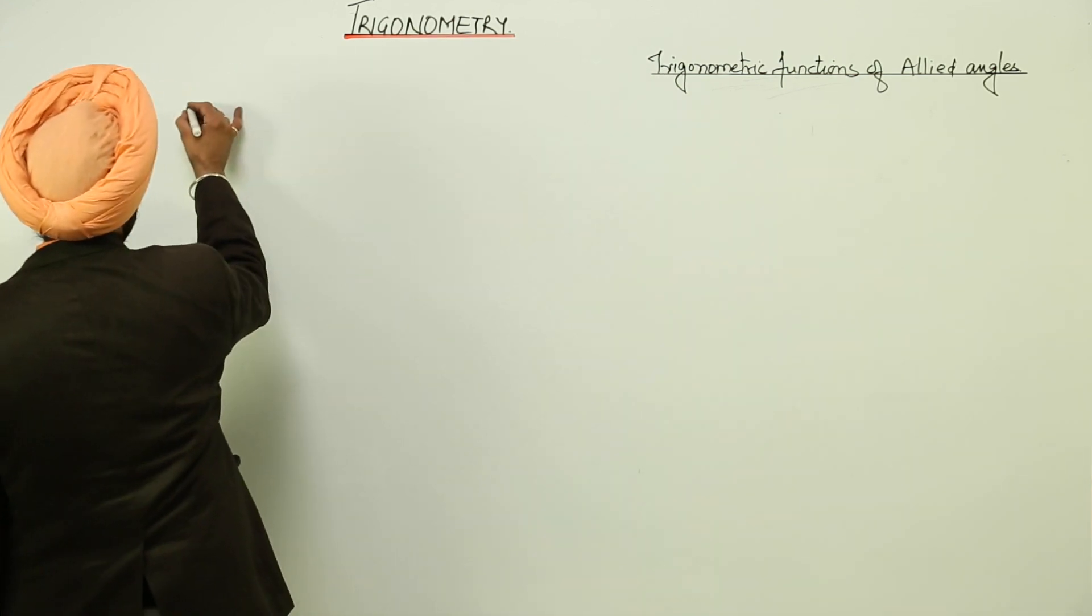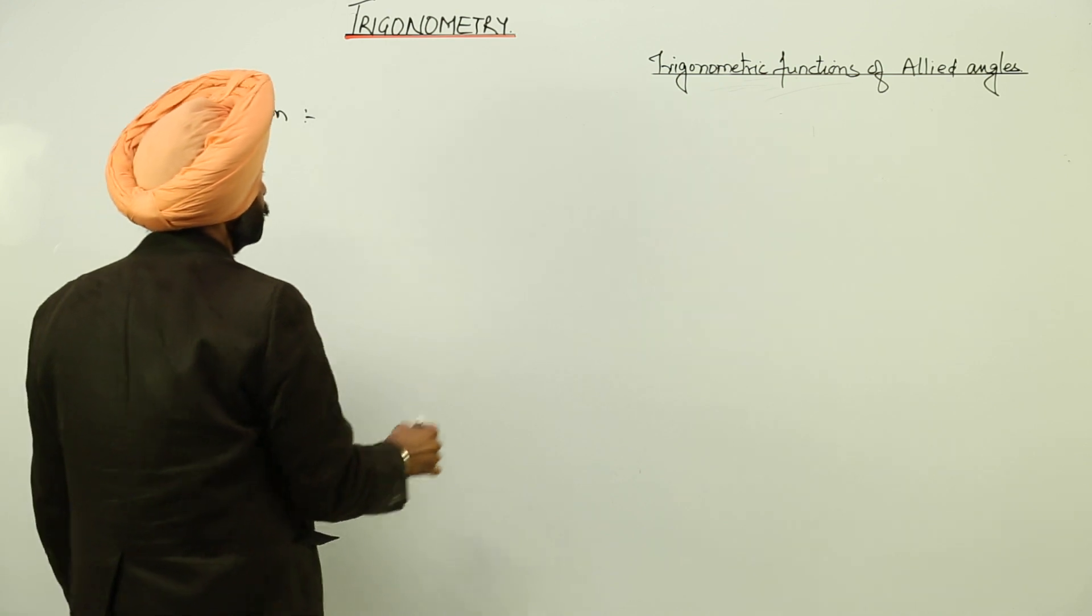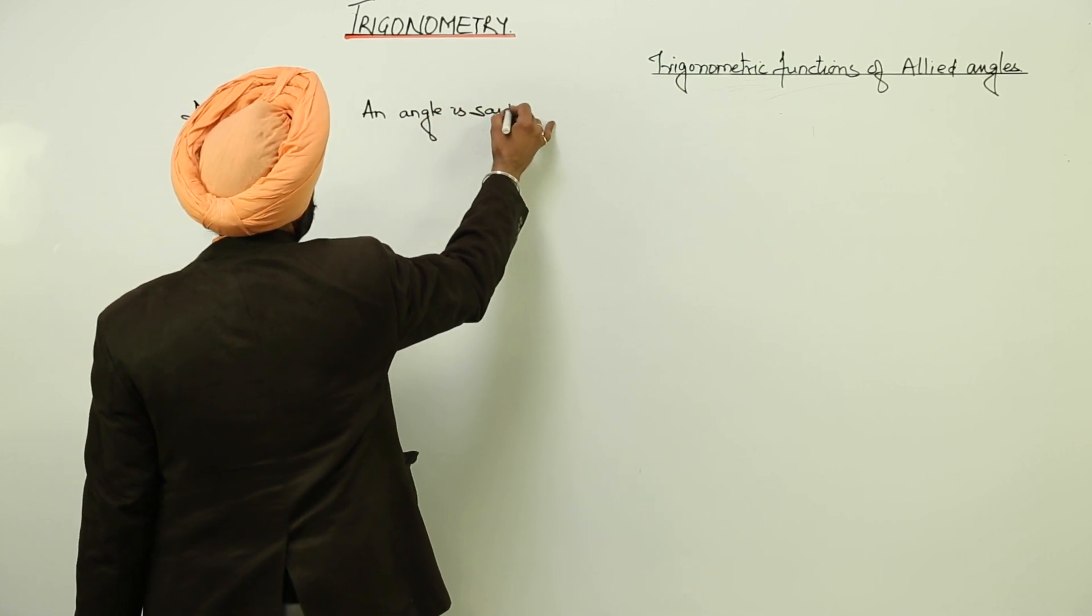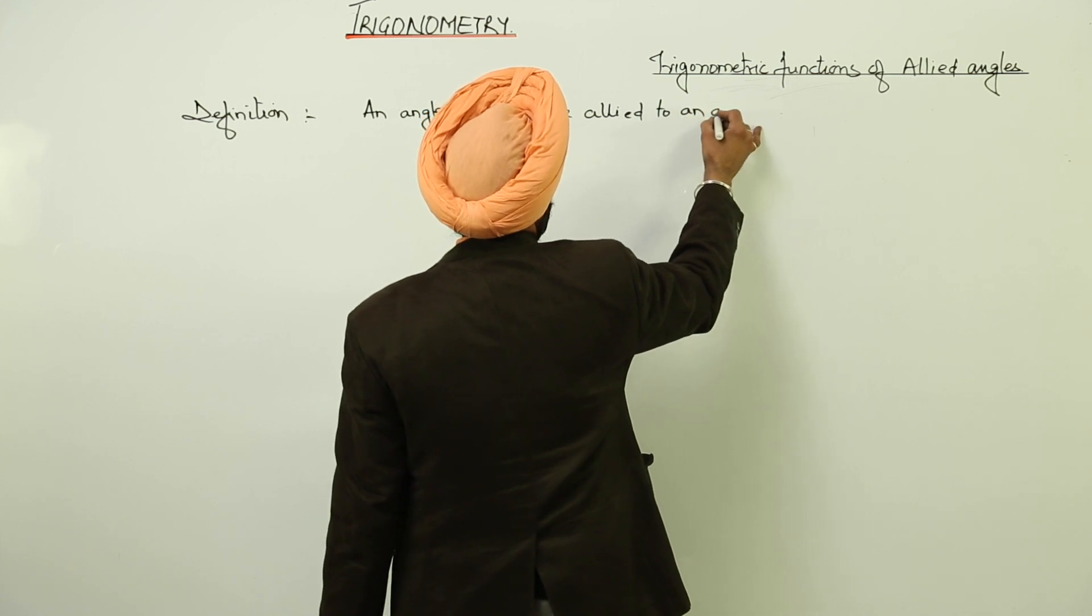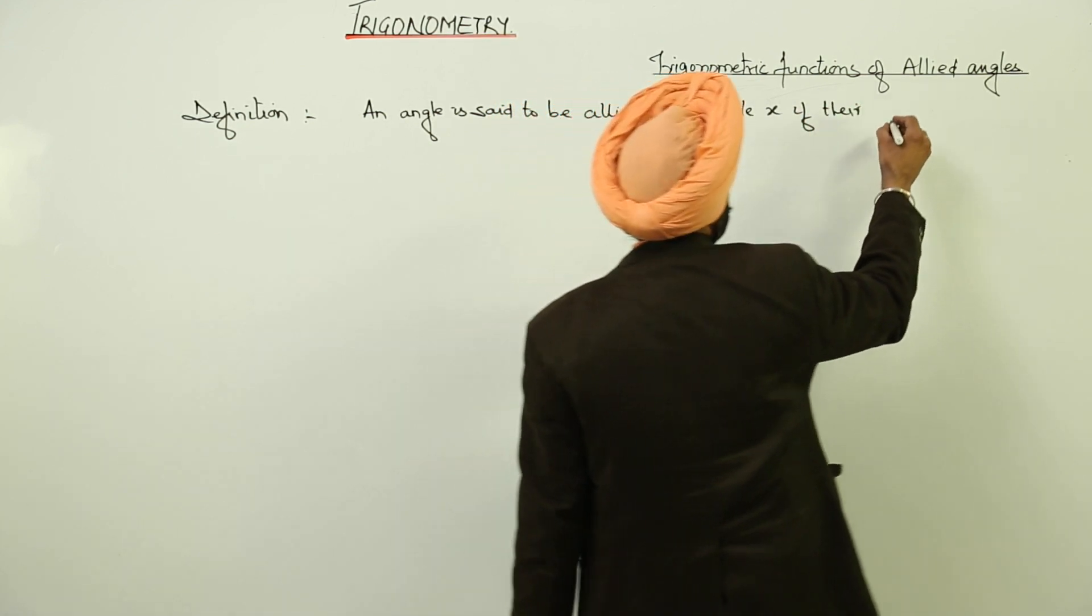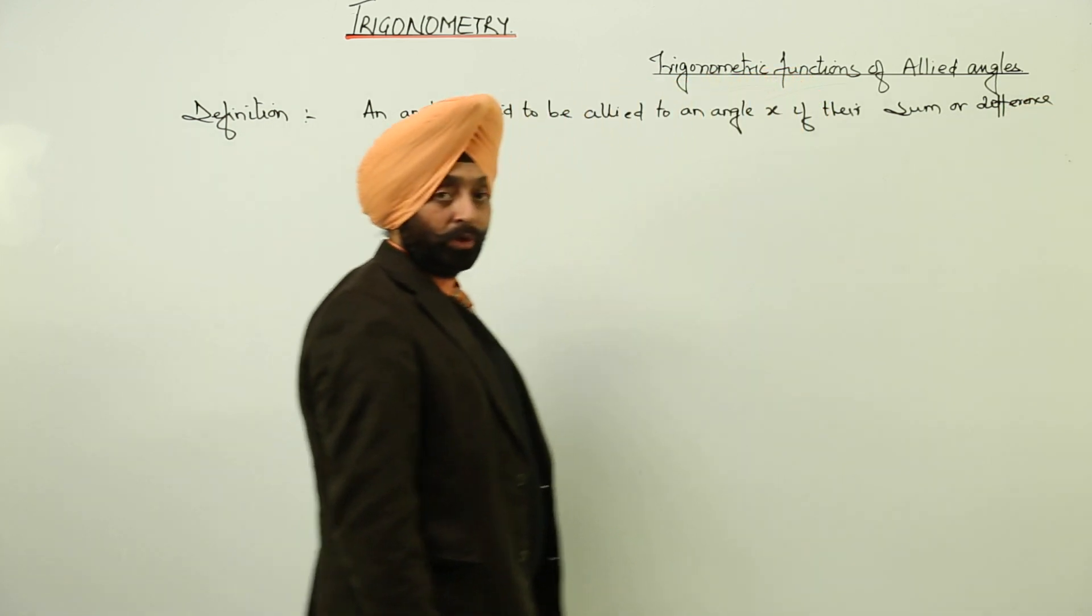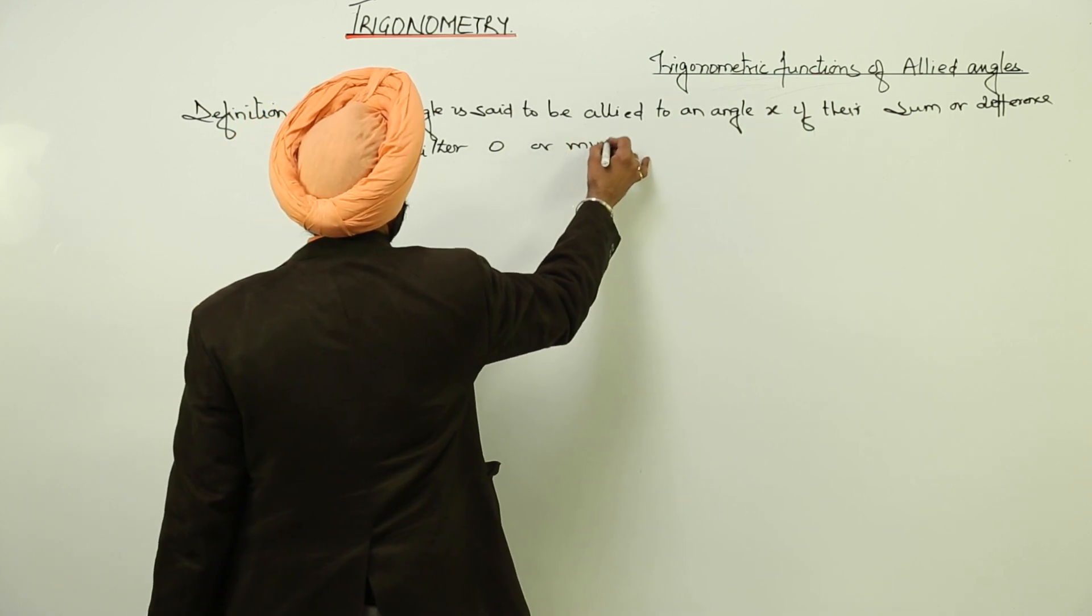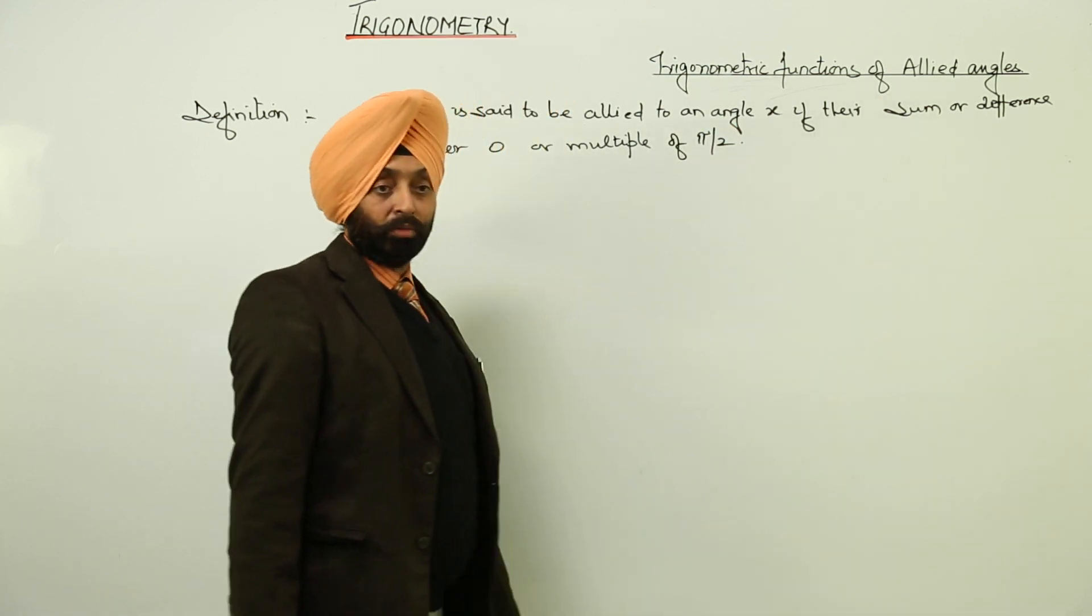Now, first of all, moving with the definition. Now, what definition says is an angle is said to be allied to an angle x if their sum or difference is either 0 or multiple of pi by 2.